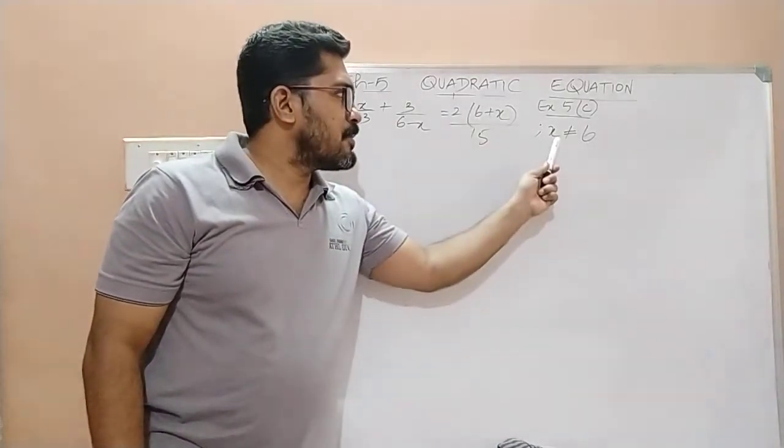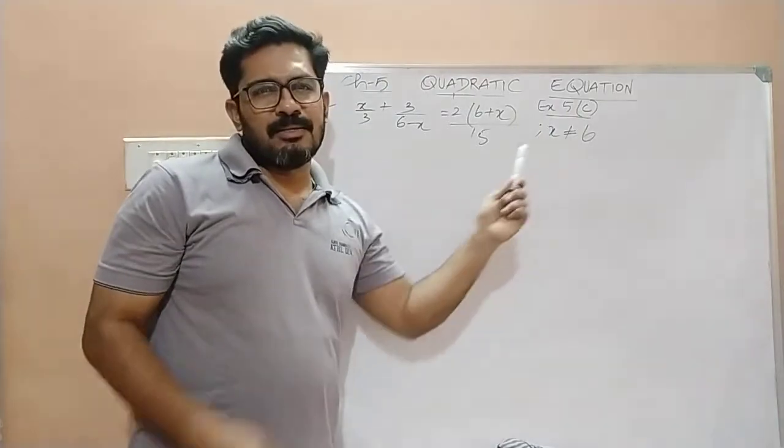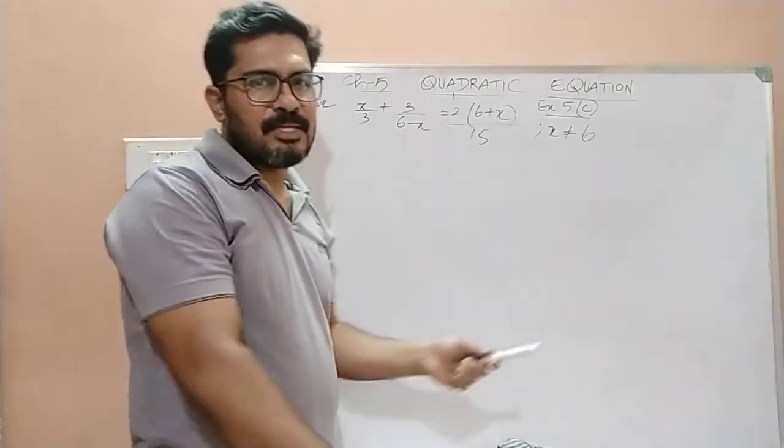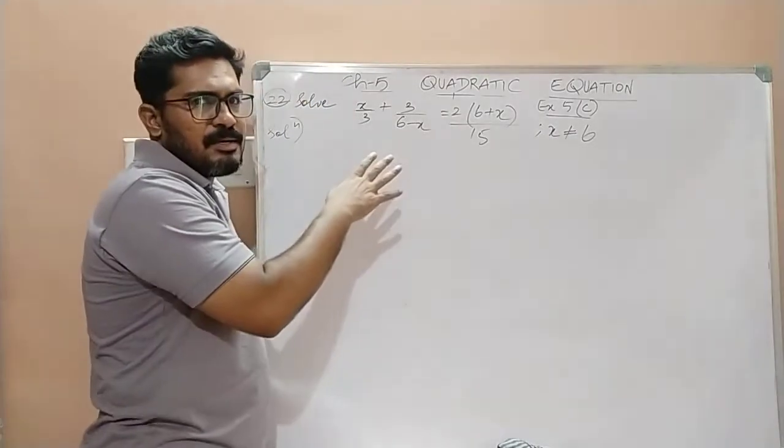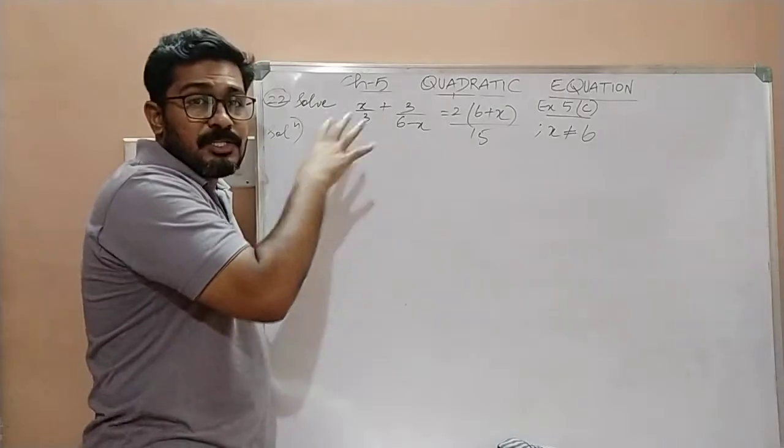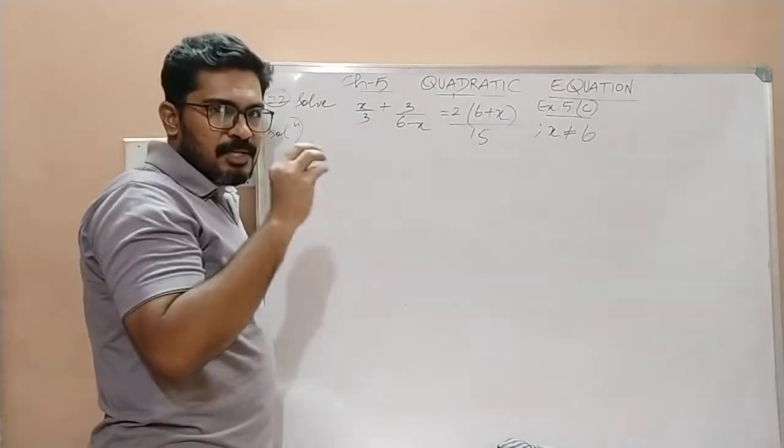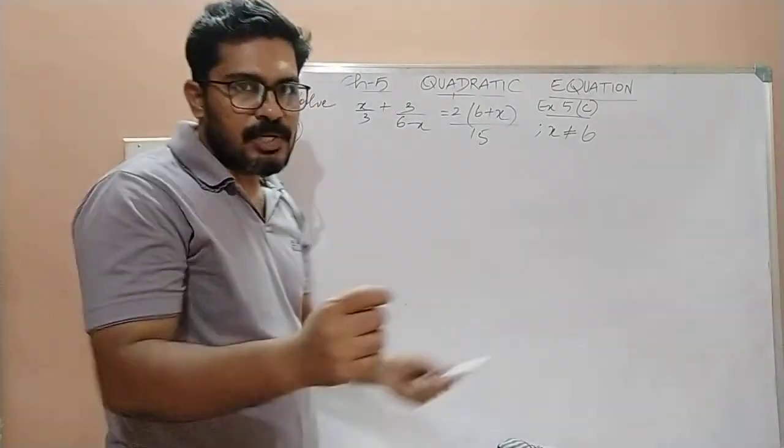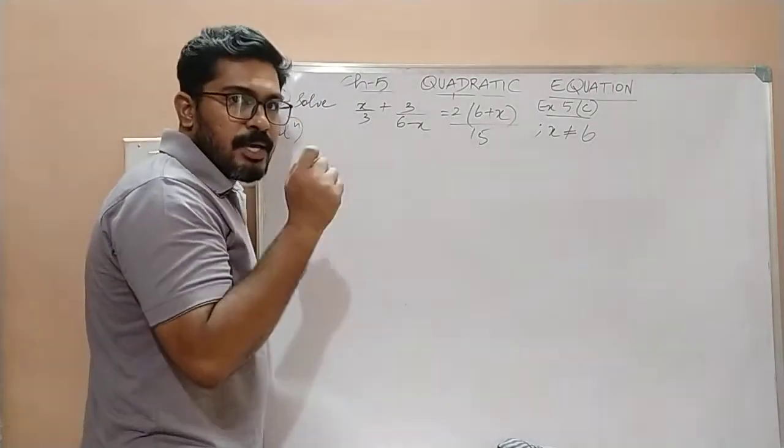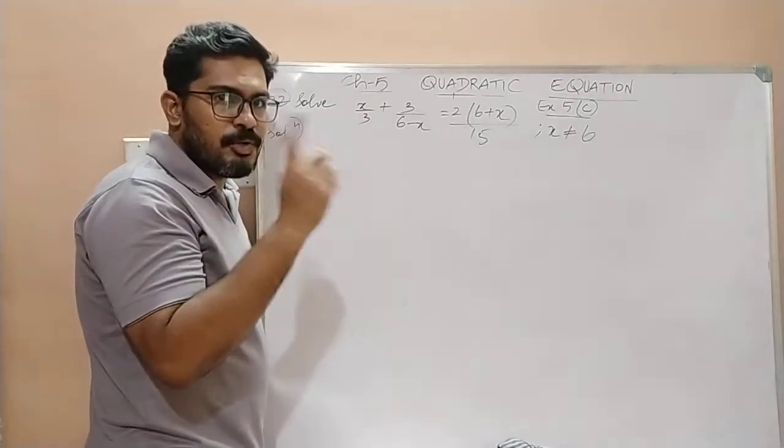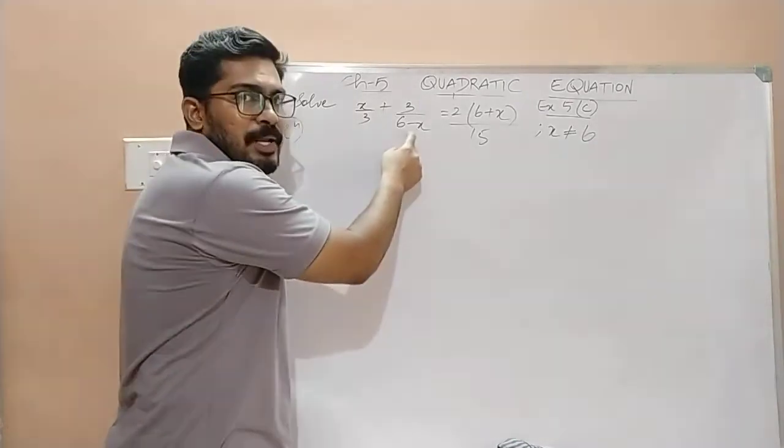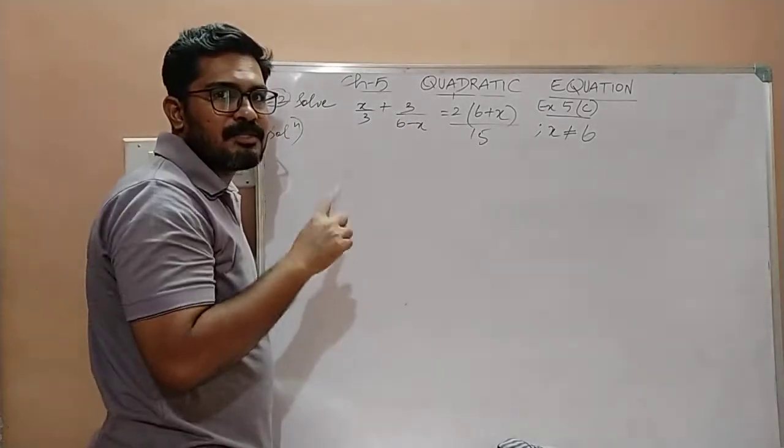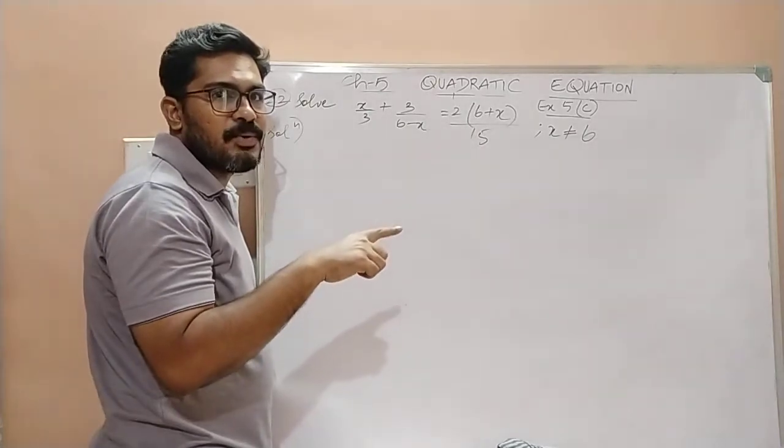Children, they have given here x is not equal to 6. See you should know why they have mentioned that x is not equal to 6 over here. Very simple children. This doesn't have much importance in solving the sum but it is just for information. If suppose the x value is equal to 6 then you know what will happen. Here if you replace this x with 6 this whole expression will become 6 minus 6 which is equal to 0. And children, you know that you can never have a 0 in the denominator because any number divided by 0 is what?